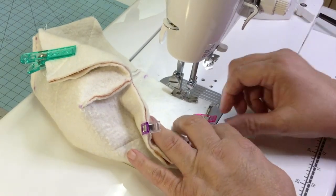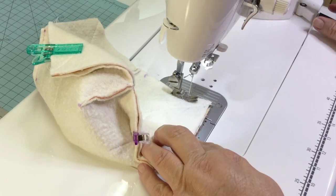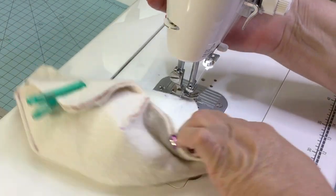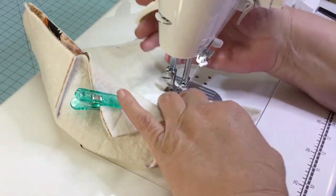And now use an approximately 1 quarter inch seam allowance. Sew all the way around up until your opening. And also reinforce stitch at the beginning and the end of your opening.